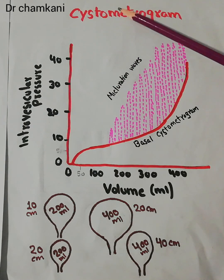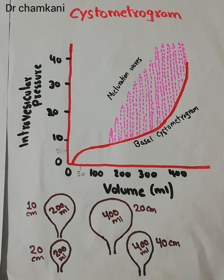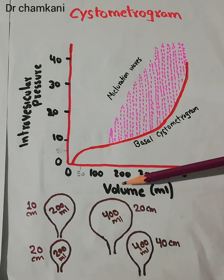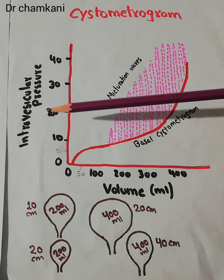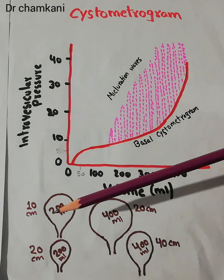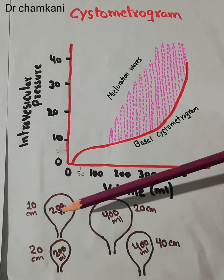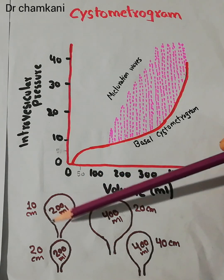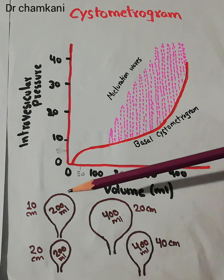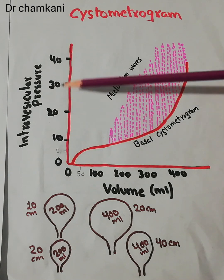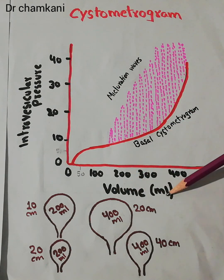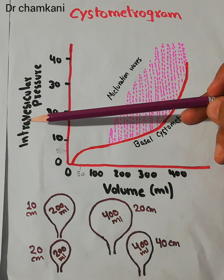We are going to talk about the normal Cystometrogram in a person with normal urinary bladder and normal nervous system. When we plot the Cystometrogram, we have the volume of urine on the x-axis and the pressure in the bladder wall on the y-axis. So we have the volume in milliliters and the intravesicular pressure plotted on the y-axis.